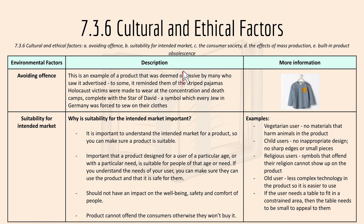The last section is 7.3.6 cultural and ethical factors, with six points. Number one is avoiding offense. An example of a product deemed offensive is a top that reminded many people of the striped pajamas worn by Holocaust victims in World War II. You have to avoid offense in case people get offended by your designs.